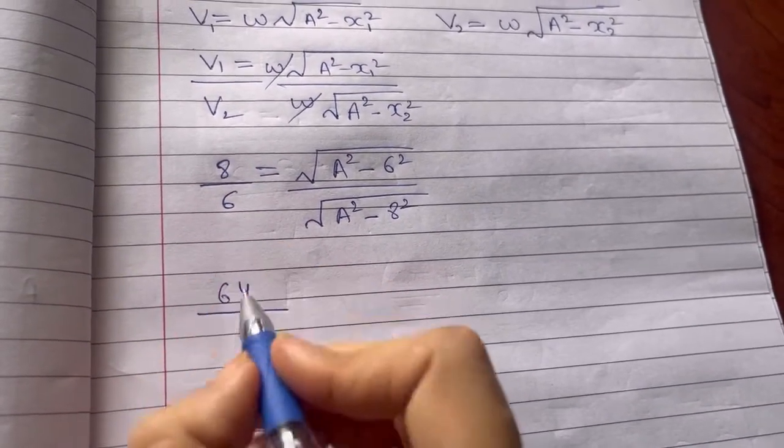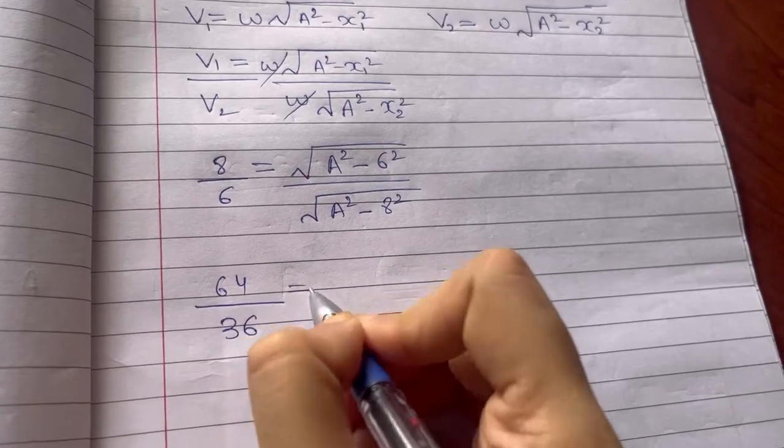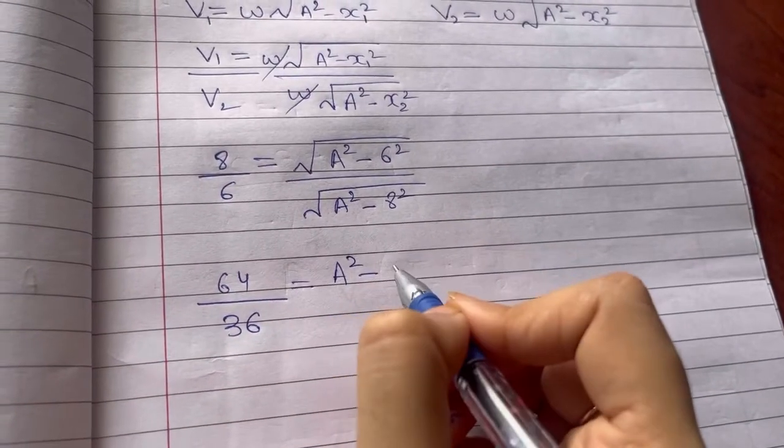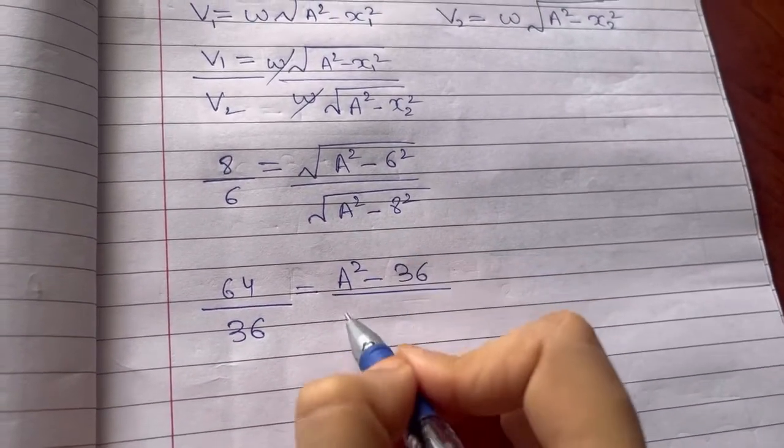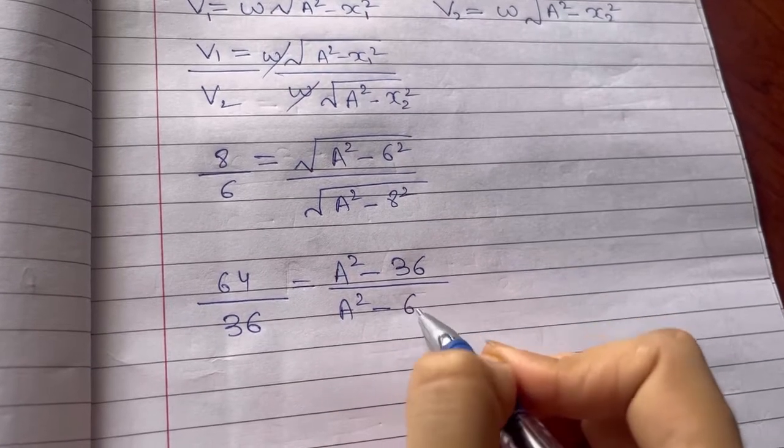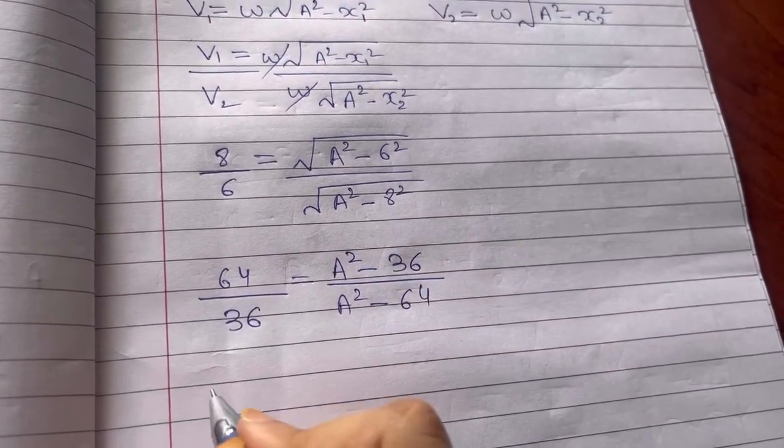X2 is 8. When you take the square root on left hand side, this becomes 8 square, that's 64. 6 square, that's 36. So what we have here is A square minus 6 square, that's 36, then you have A square minus 8 square, that's 64. Now it is simple, you just cross multiply.